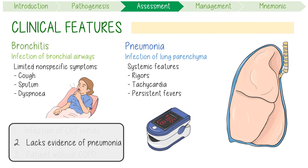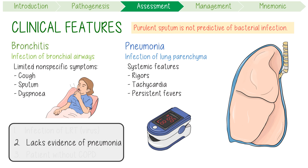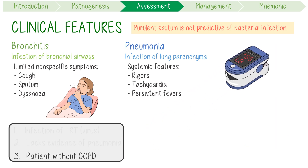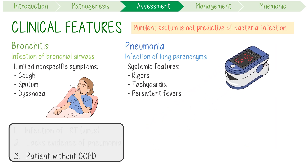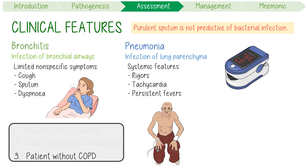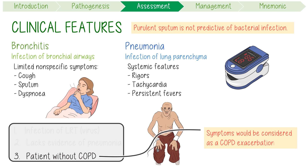An important note is that purulent, or coloured sputum, is not predictive of a bacterial infection. Finally, my last core element of the definition says acute bronchitis occurs in the absence of COPD. This is because a patient with these symptoms would just be considered to have a COPD exacerbation instead of acute bronchitis.